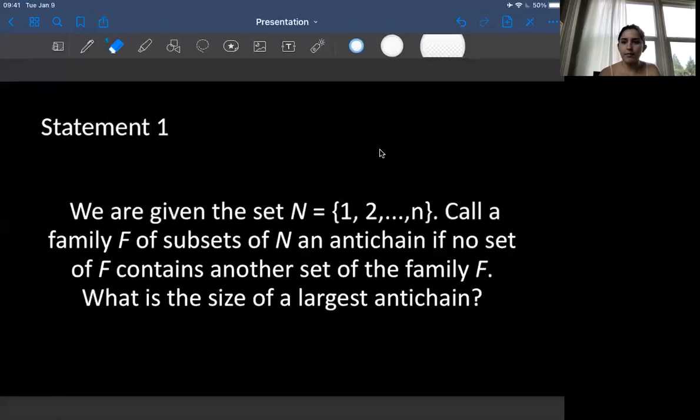And statement 1 says, we are given the set N equals 1, 2, up to n. And we call a family F of subsets of N an anti-chain if no set of F contains another set of the family F. So this is really wordy, but essentially they are just defining what we know to be an anti-chain.